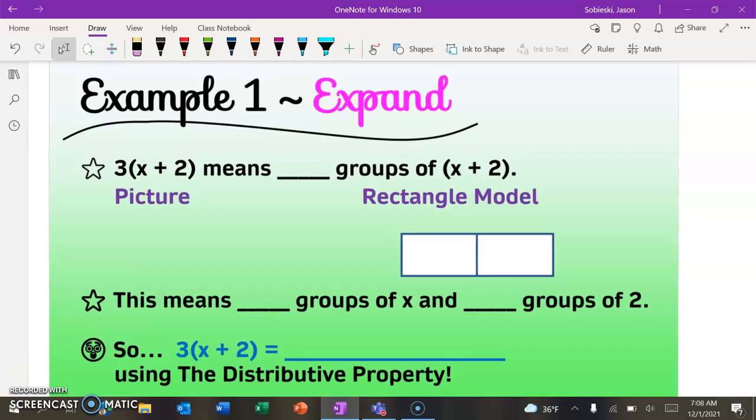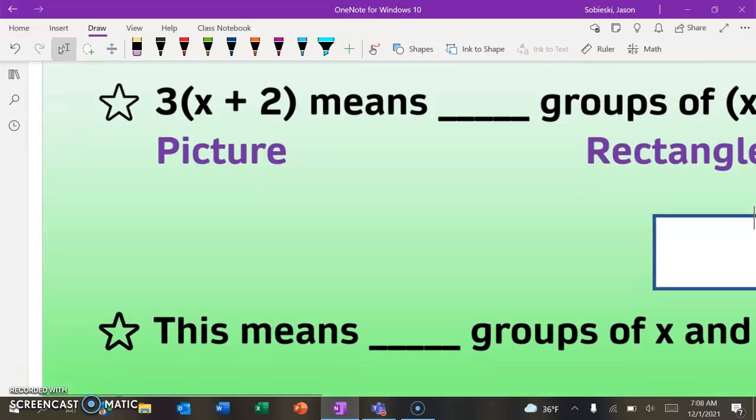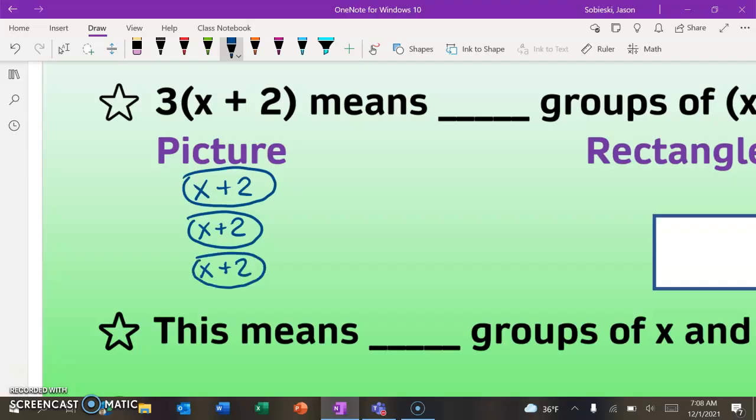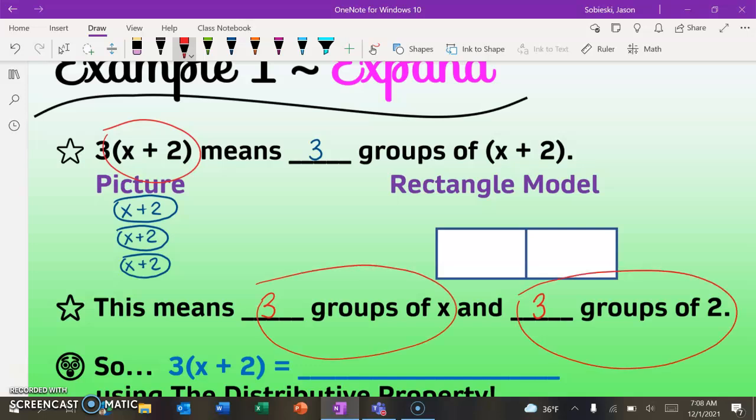All right, so let's jump right in with one example where we're going to expand. So again, think about what that word means. It means to make bigger. So if we had three times and then in parentheses x plus two, if we wanted to represent that with a picture, maybe you would draw it something like this. It's three times this recipe called x plus two. So there's really three groups of x plus two. So this is just a little visual to help you see what it would look like. But the real skill that we're looking at for today is using this rectangle model. And then, of course, before we do that, this just really means three groups of x and three groups of two. Three times the whole recipe is the same thing as three times the first ingredient and three times the second ingredient.